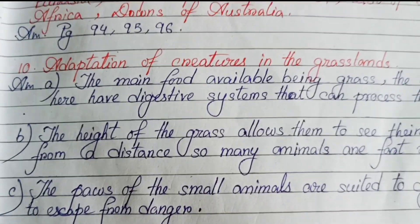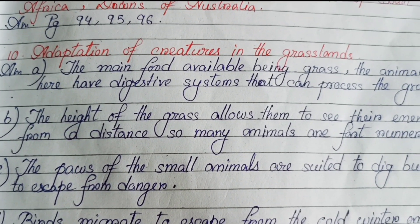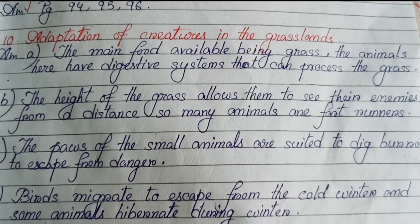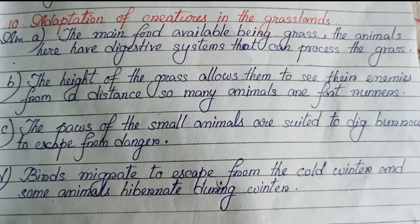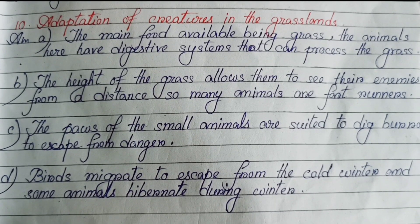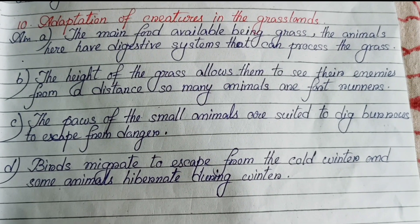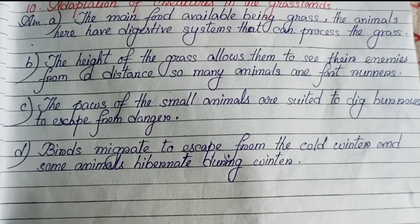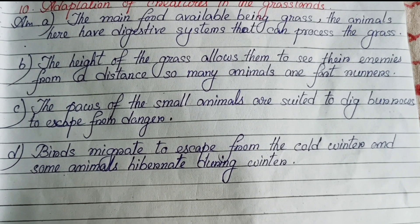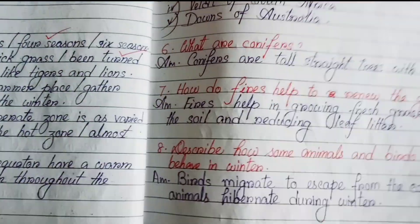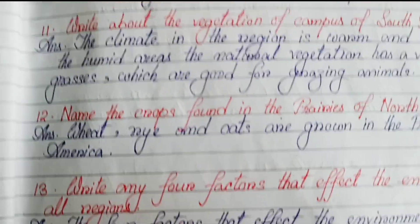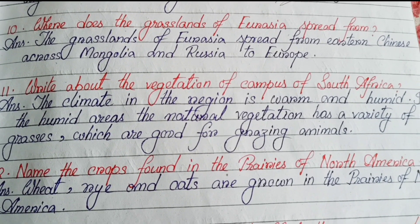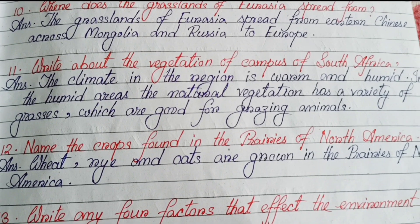Adaptation of creatures in the grasslands: (a) the main food being grass, animals have digestive systems that can process grass; (b) the height of the grass allows them to see their enemies from a distance, so many animals are fast runners; (c) the paws of small animals are suited to dig burrows to escape danger; (d) birds migrate to escape the cold winter and some animals hibernate. The grasslands of Eurasia spread from eastern China across Mongolia and Russia to Europe.